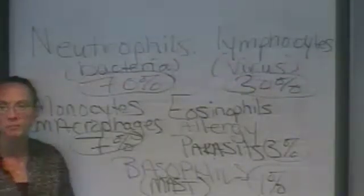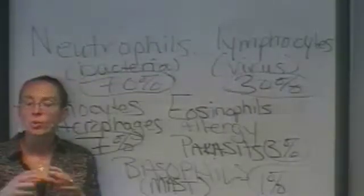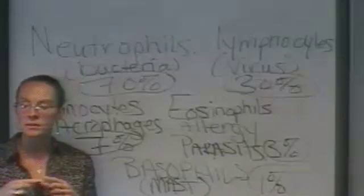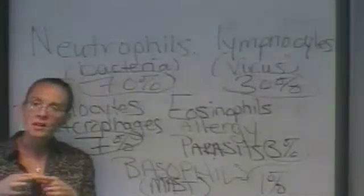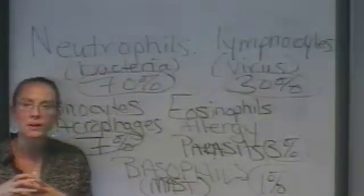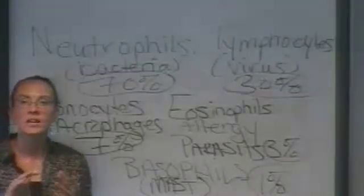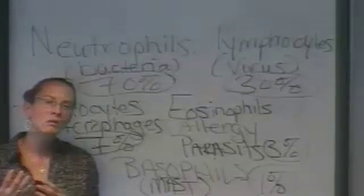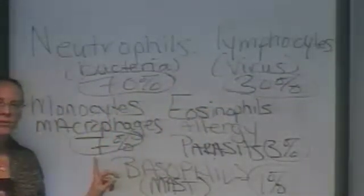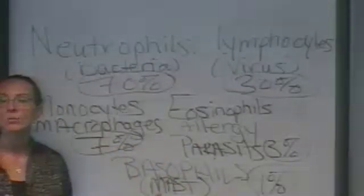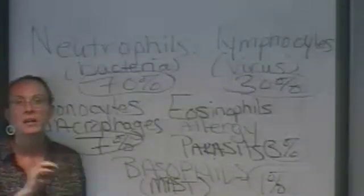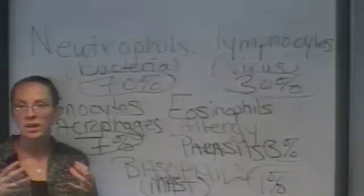If you've ever heard of a complete blood count, a cytologist puts a drop of blood on a slide and counts the white blood cells, tallying the percentages of each type. In a normal sample from someone who is not sick, there should be approximately 70% neutrophils, 30% lymphocytes, 7% monocytes or macrophages, 3% eosinophils, and 1% basophils — so 70, 30, 7, 3, 1. These are the approximate normal percentages of white blood cells.